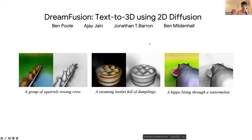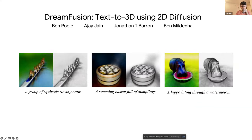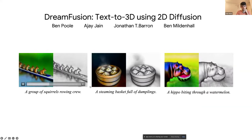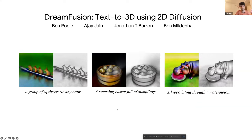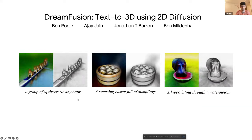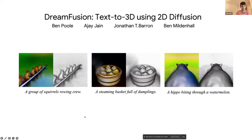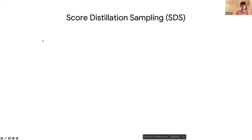Our inspiration came from DreamFusion, which uses a diffusion model as a score function to train a NeRF model. At each iteration they render an image from the NeRF representation and update it using a score based on the rendered image and the text prompt describing the object. The score function is called Score Distillation Sampling, or SDS.